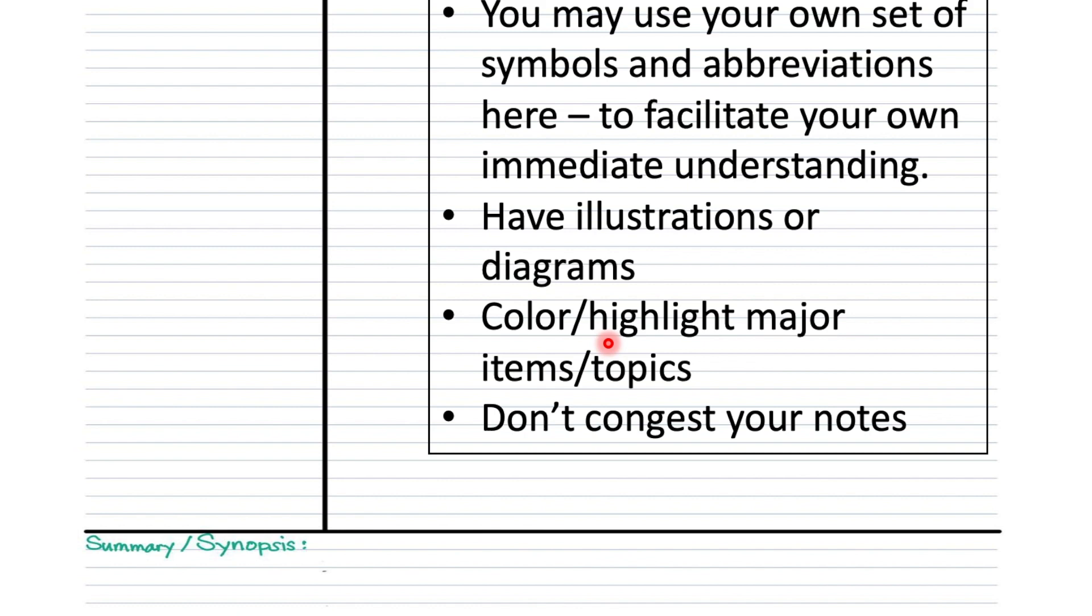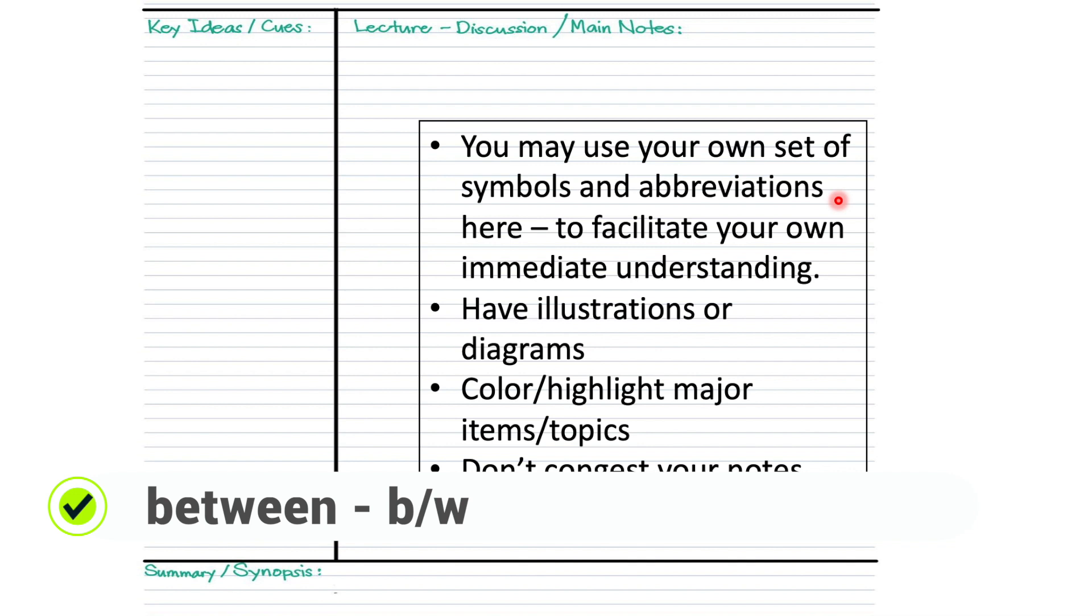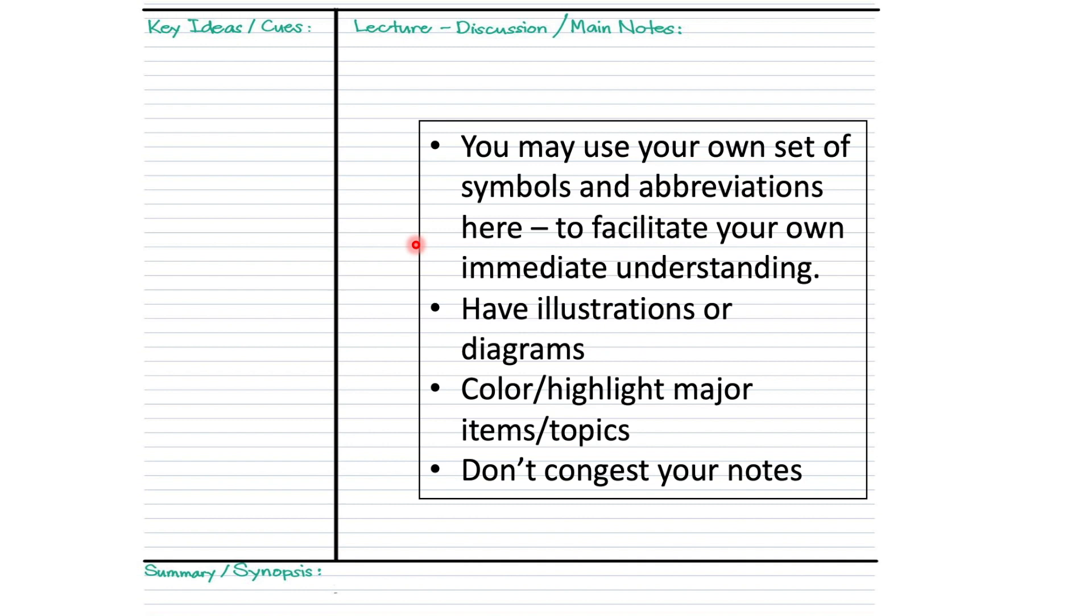What are we gonna put here? In the main notes area, you may use your own set of symbols and abbreviations. For example, the word 'between' - there's no need to spell out 'between', you can just put B slash W. Or like the word 'without', you could have W slash O, W slash C, S slash T, like that. These symbols and abbreviations can facilitate your own immediate jotting down of notes and understanding.